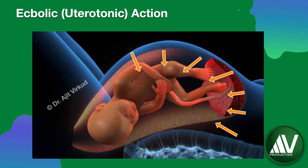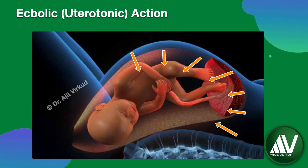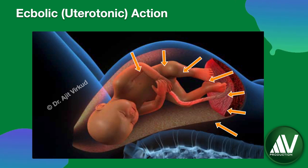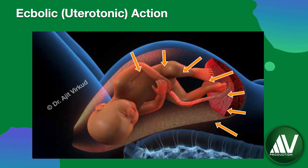Oxytocin is an ecbolic — that is, a uterotonic drug. In a full-term gravid uterus it causes physiological contractions: contraction of the upper segment and retraction of the lower segment of the uterus. It has no action on the first-trimester uterus and little action on the second-trimester uterus. In the last nine weeks there is an eight-fold increase in the sensitivity of the uterus to oxytocin. This sensitivity is increased by estrogen and decreased by progesterone.